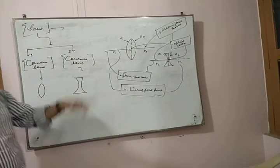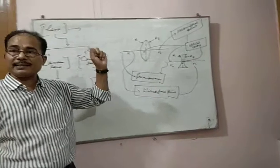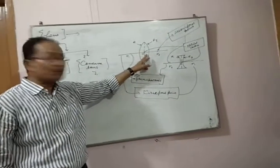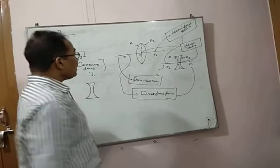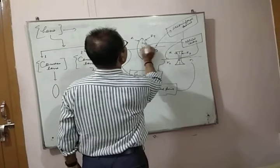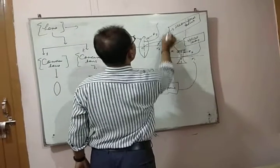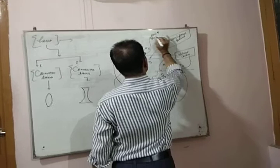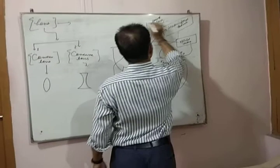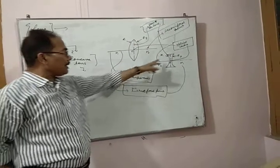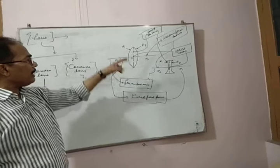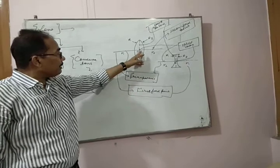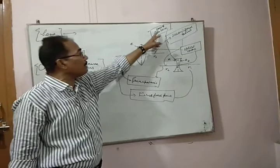These are the terms which are generally asked in examinations. First of all, what is the principal axis? As you see in the diagram, it is an imaginary line passing through the optical center and perpendicular to the axis of the lens. This is your vertical axis, and this is your axis of the lens.